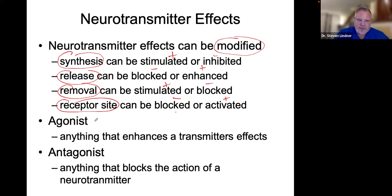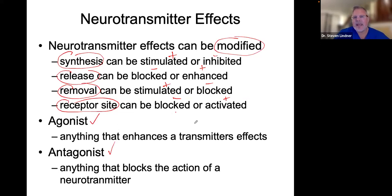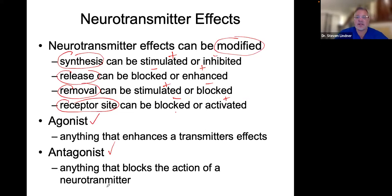Certain neurotransmitters are referred to as agonists and some are called antagonists. An agonist is anything that enhances a neurotransmitter's effect. An antagonist is one that is going to block it or do the opposite.